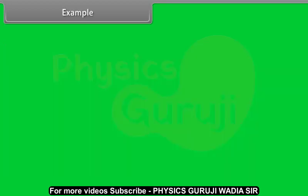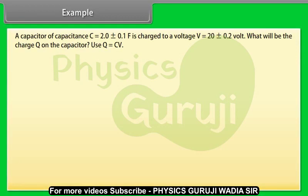Example: Let's take an example of errors. A capacitor of capacitance C equals 2.0 plus minus 0.1 microfarad is charged to a voltage V equals 20 plus minus 0.2 volt. What will be the charge Q on the capacitor? Use Q equals CV.